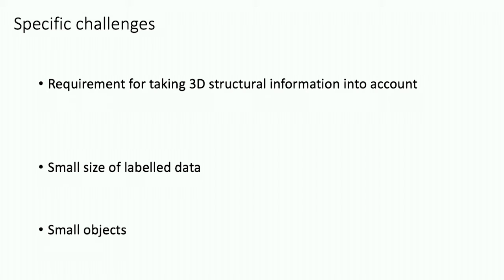However, even if 2D dense U-Net has great ability in medical image segmentation, we still face some specific challenges. First, if we use pure 2D dense U-Net, we lose a lot of information in the longitudinal direction. Also, if we use 3D dense U-Net, we face a problem of small data size, which may cause the model to overfit quickly. Third, the segmentation object is also relatively small compared to the anatomical context, which may cause difficulty distinguishing artery from vein.